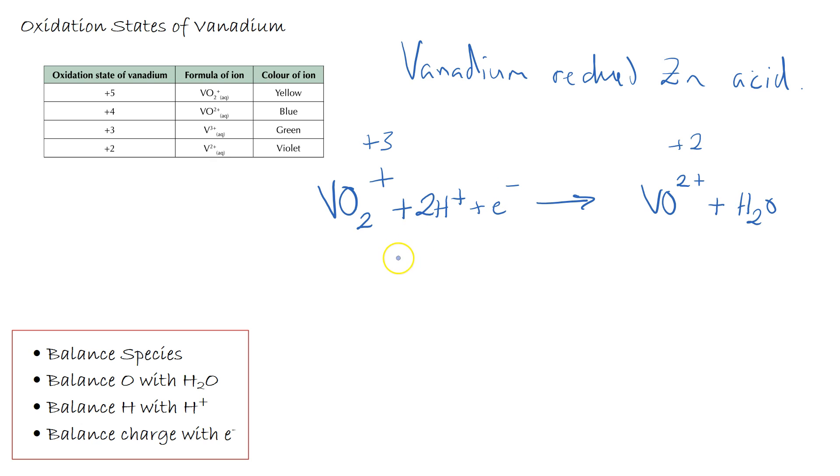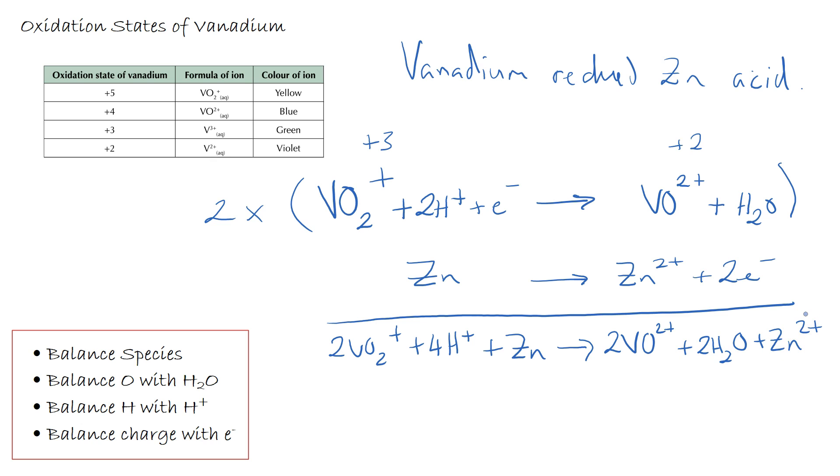On the right I've got one plus from VO2+ and two hydrogen pluses, that's a total of plus three. On the left I've simply got plus two so I need to add one electron to the left hand side. Then if I'm going to write a full redox equation with zinc, I'm going to make zinc to zinc two plus plus two E minus. I simply multiply up the top line by two. So my total equation becomes 2VO2+ plus 4H+ giving 2VO2+ plus 2H2O plus Zn2+.